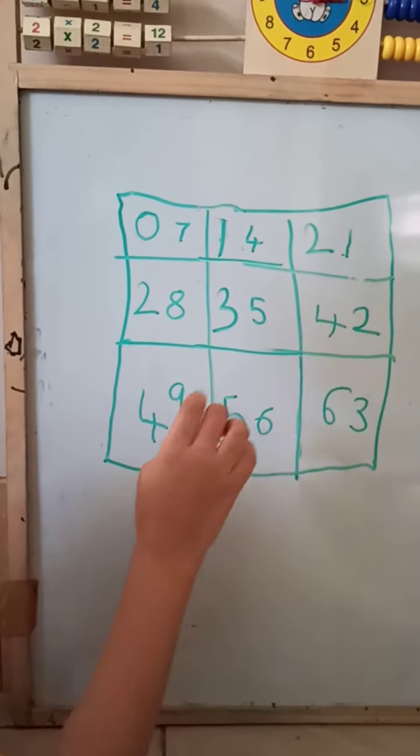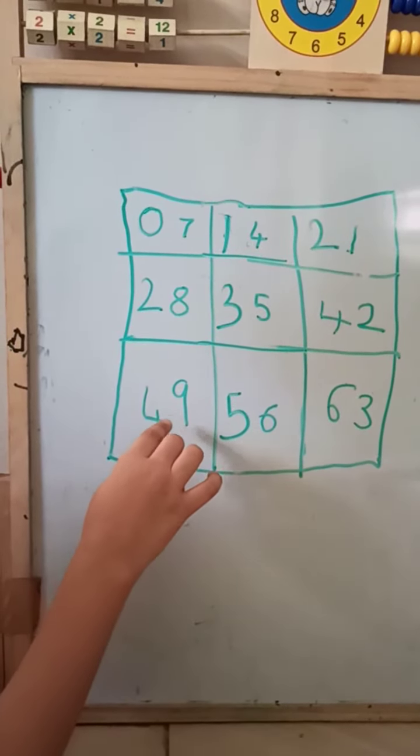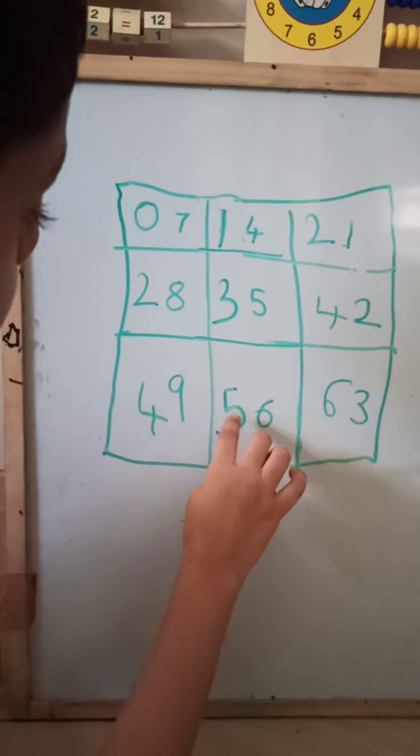Seven six's forty-two, seven seven's forty-nine, seven eight's fifty-six.